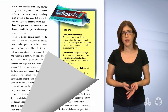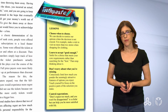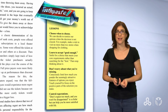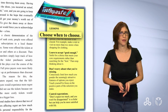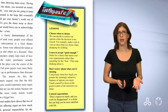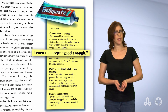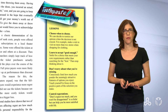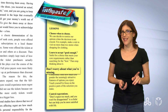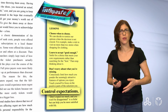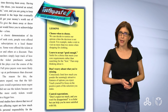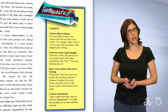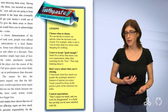One more thing you might have noticed — did you see the box labeled 'Lessons'? Let's zoom in and go over the titles. 'Choose when to choose' — sometimes maybe we shouldn't choose. 'Learn to accept good enough' — sometimes we don't need the best; good enough is good enough. 'Don't worry about what you're missing' — good advice. 'Control expectations' — sometimes we expect a lot. It looks like these are tips or recommendations on how to make choices. Maybe the writer wants to give his readers tips on how to deal with the negative aspects of abundant choice.